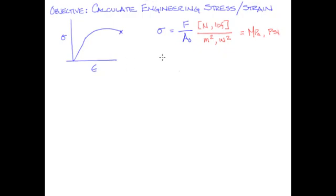Engineering strain is calculated using our original length and our instantaneous length. So it's going to be delta L over L0.